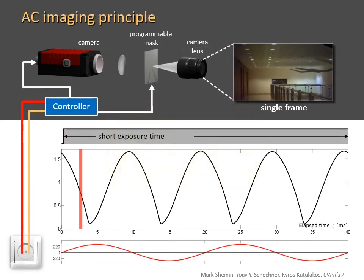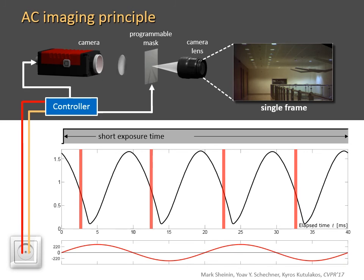The A-cam has a programmable optical shutter, called a mask, between the sensor and camera lens. The camera exposure is set to span hundreds of flicker cycles. During this long exposure, the programmable mask blocks the light from the scene at all times except during specific, pre-set brief intervals in each cycle. These pre-set intervals all correspond to the same fraction of the flicker period. The A-cam is physically connected to an AC outlet, which ensures that the mask unblocks the light at the precise instant within each flicker cycle.